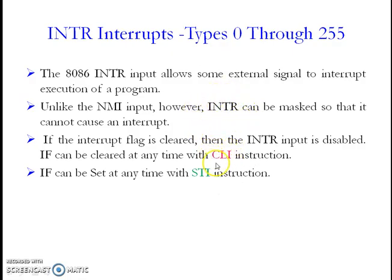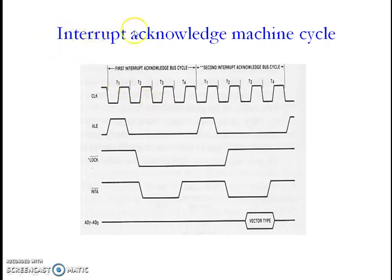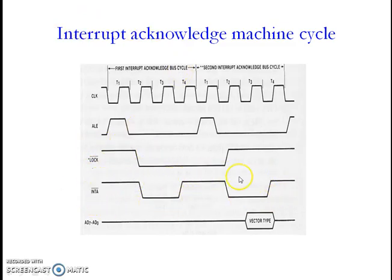The IF flag is cleared or the IF flag is set — based on the IF flag value, that interrupt is accepted or rejected. That is how the INTR interrupt acts. Coming to the INTR acknowledgement machine cycle, whenever an interrupt comes from an external source, the external source has to give that type number to the 8086 microprocessor.